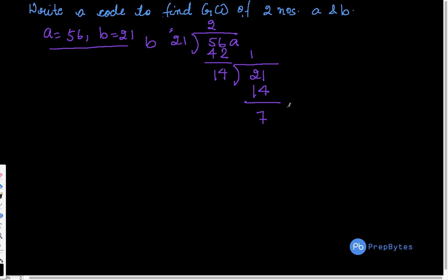So now I divide 14, we bring 14 here with 7. 7 times 2 is 14, 0. So I get 0 here and we get the dividend as 7. We get the GCD as 7. So my GCD for 56 and 21 is 7.